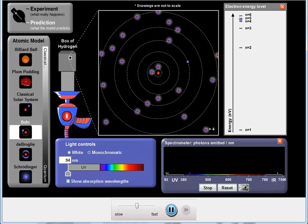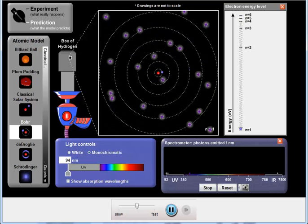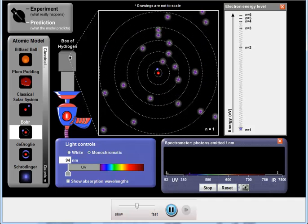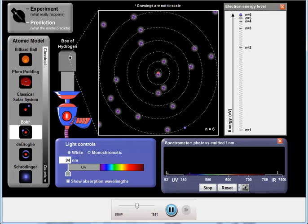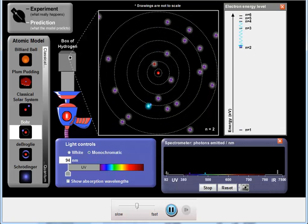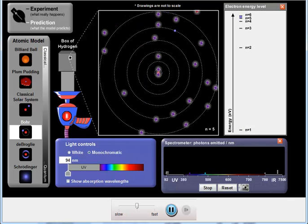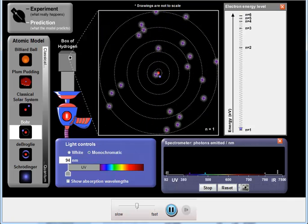When the electron absorbs energy, it jumps up to n equals 6. And then it can fall back down to ground level through a series of different steps. Through those steps, a photon is released. The energy, or the color, of this photon is recorded on this chart down here.